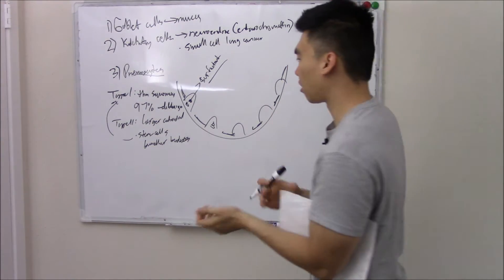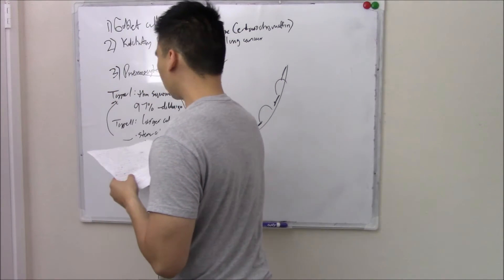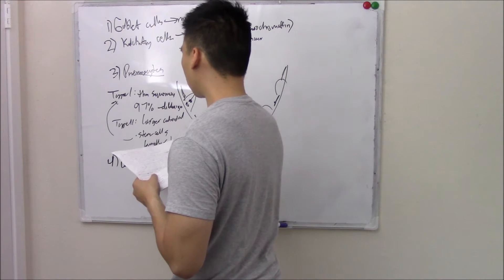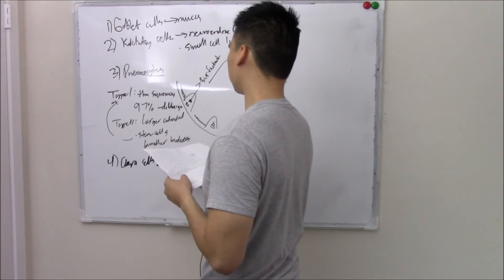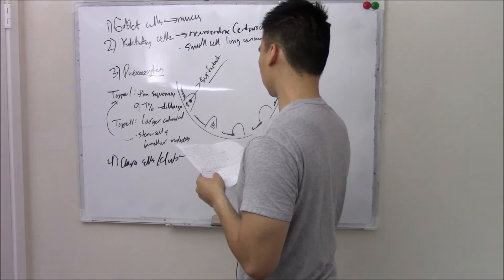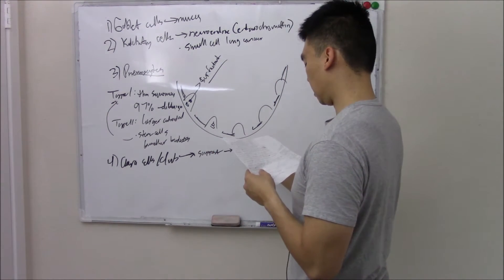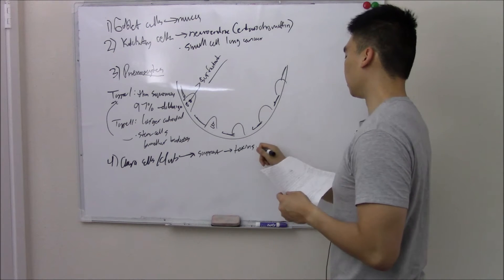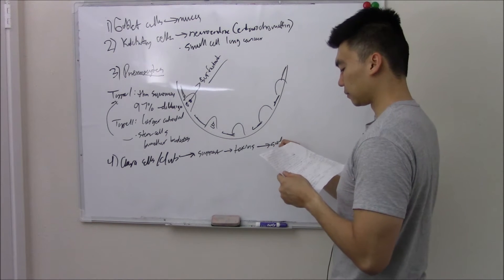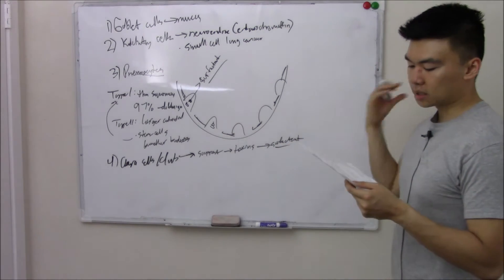Before I talk about surfactant, our last cell is called your Clara cells, sometimes called club cells. These are also support cells that help degrade toxins, act as a reserve cell, and they also make our surfactant.